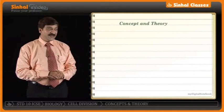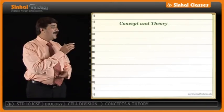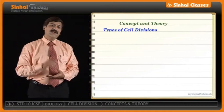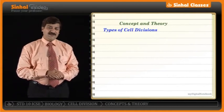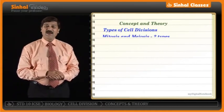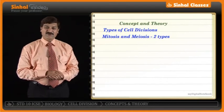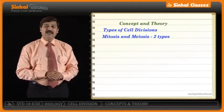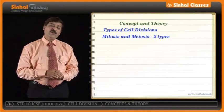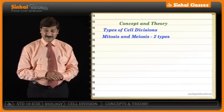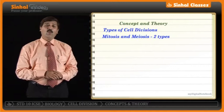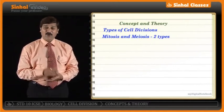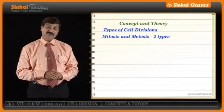Under this heading we'll take into account the first point. The types of cell divisions we have to study are: the first one is mitosis, the second one is meiosis. Even before we proceed with mitosis and meiosis, let us take into account what is the definition of mitosis and what is the definition of meiosis.